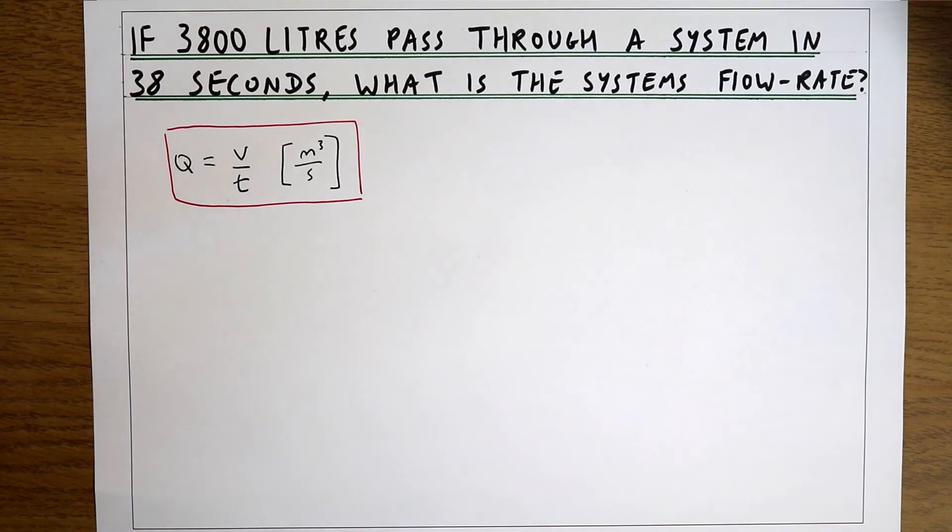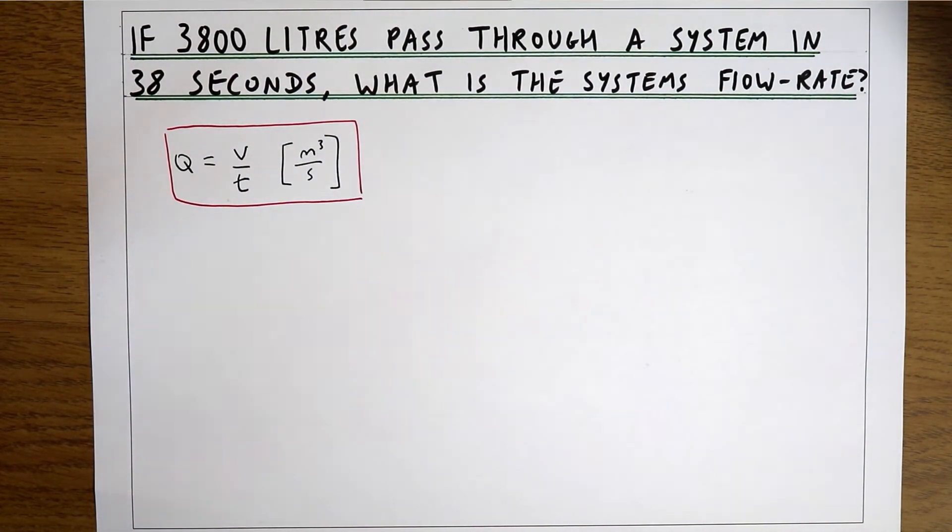If you turned on a tap and that tap was running at 10 litres per second that means for every second the system is running 10 litres will be passing through it.